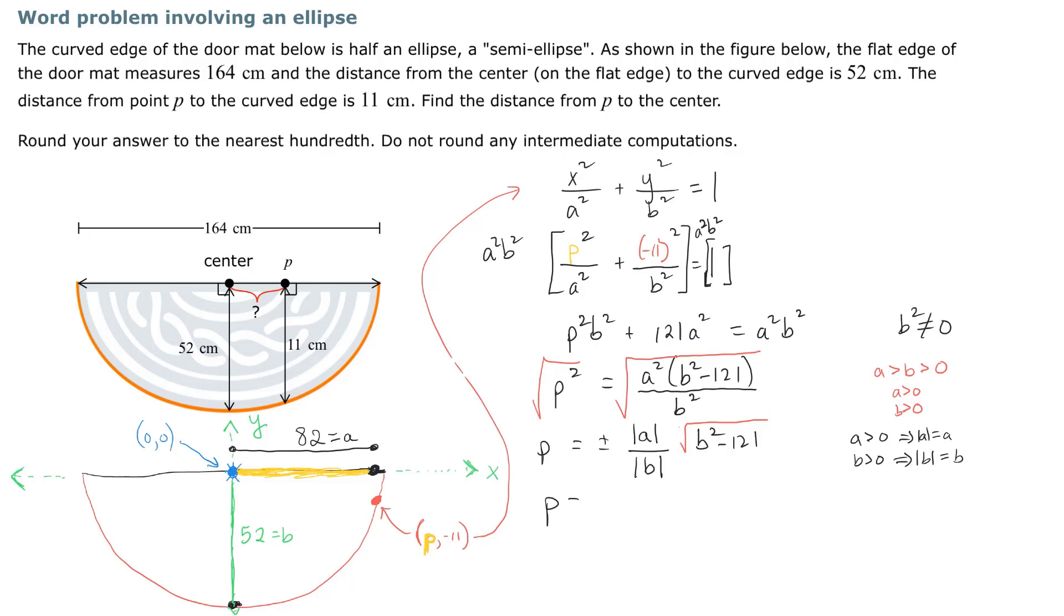So we got P is now equal to plus or minus a over b times the square root of b² minus 121. Now we're ready to put in the numbers. P is equal to plus or minus. What was a? 82. b was 52. b² is 52² minus 121. Go ahead and use the order of operations and perform this on your calculator.